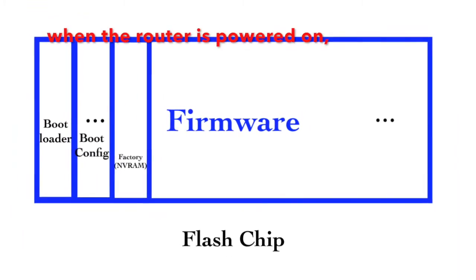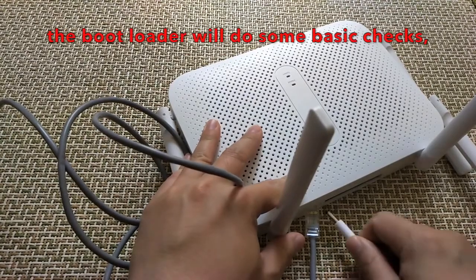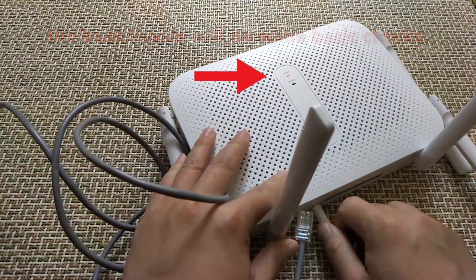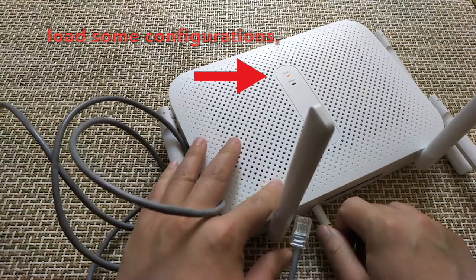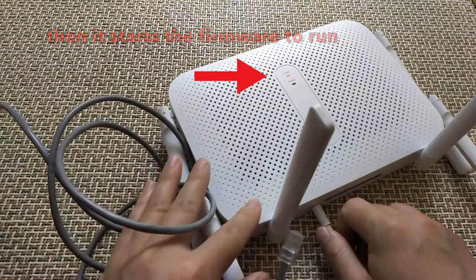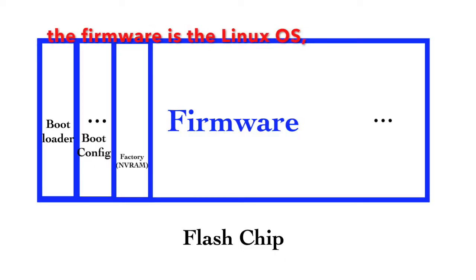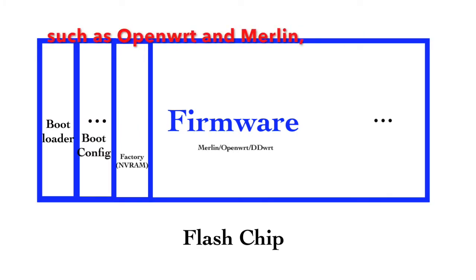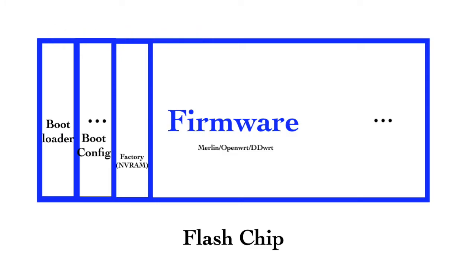When the router is powered on, the bootloader will do some basic checks, load some configurations, then start the firmware to run. The firmware is the Linux operating system. There are different Linux distributions like OpenWRT and Merlin which are famous.